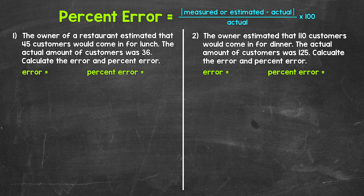Now you'll notice we're calculating error and percent error here. We'll see the difference as we work through this. To calculate percent error, we have the formula right here: we take the measured value or estimated value and subtract the actual value. Then we take the absolute value of that result — so if it's negative, it will turn positive. Then we divide that by the actual value. This gives us a decimal, which we multiply by 100 to convert it to a percent.